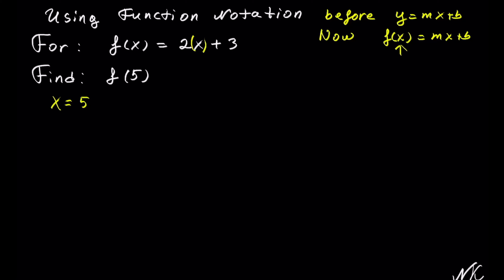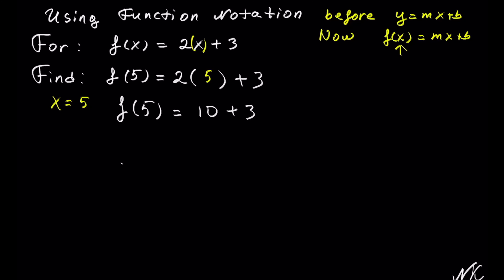To calculate f of 5, we take the original function — 2 times x plus 3 — and instead of x we substitute 5. So we get f of 5 is equal to 2 times 5 is 10 plus 3, so f of 5 is equal to 13, and this is our solution.